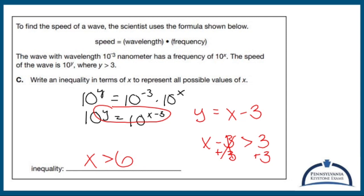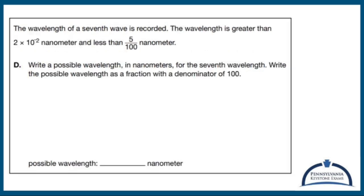Pretty rough, not a fan. And the best part about this whole thing is that's part C. We've got one more to go. The wavelength of a seventh wave is recorded. The wavelength is greater than 2 times 10 to the negative second and less than 5/100 of a nanometer. Write a possible wavelength in nanometers for the seventh wavelength. Write the possible wavelength as a fraction with a denominator of 100.